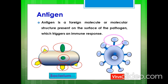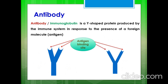Antigen may be protein or polysaccharide in nature. Sometimes it may be lipid, polypeptides, or nucleic acid. Antibody, which is also known as immunoglobulin, is a Y-shaped protein produced by the immune system in response to the presence of a foreign body, which is known as antigen.